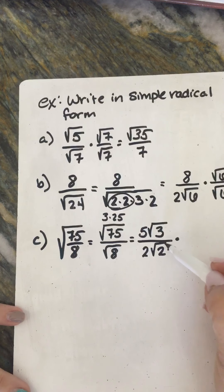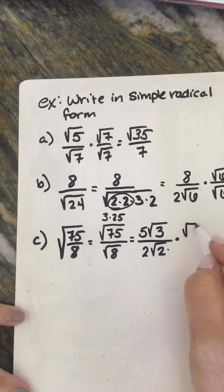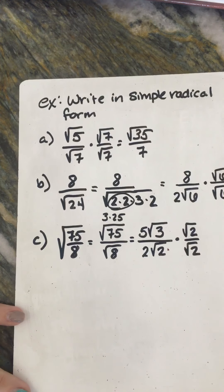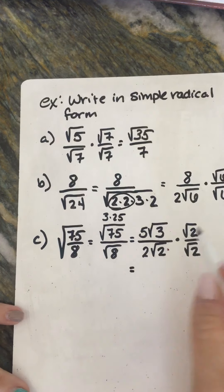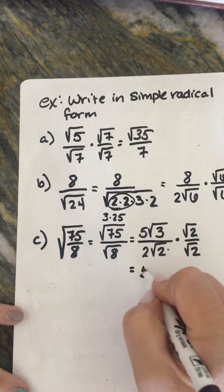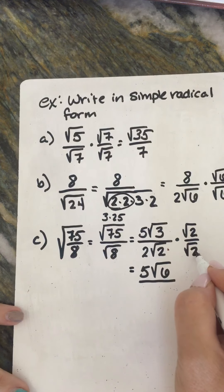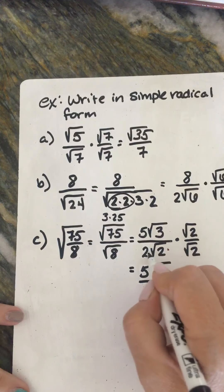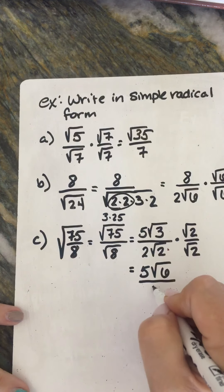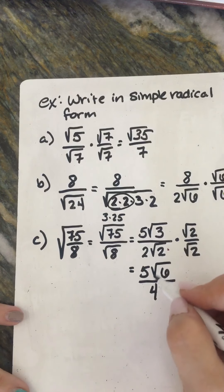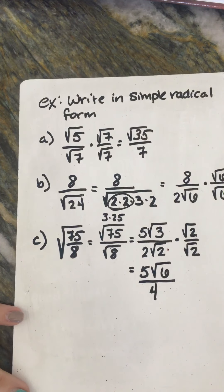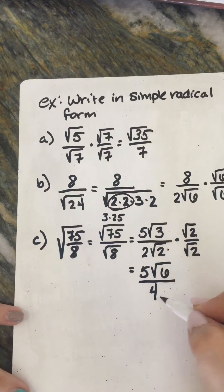So multiply by one strategically — use square root of 2 over square root of 2. Square root of 3 times square root of 2 is square root of 6, so the numerator becomes 5 square root of 6. Square root of 2 times square root of 2 is 2, and we already have 2 here, so the denominator is 4. Our answer is 5 square root of 6 over 4. Is the fraction reduced? Five-fourths looks good. Are we reducing with the 6? No, we're not.